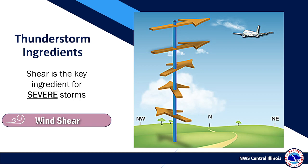Wind shear is the change in wind speed and/or direction with height, and is key for the development of severe thunderstorms. There are two types of shear: speed shear occurs when wind speed increases with height, and directional shear occurs when the wind direction changes with height.